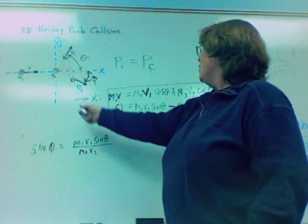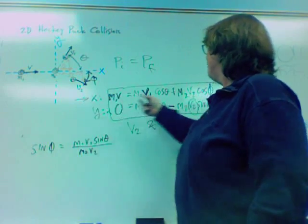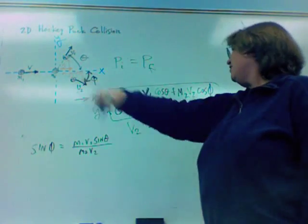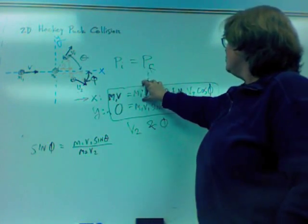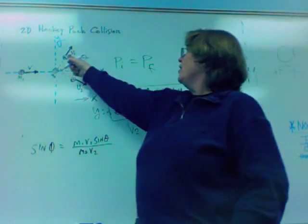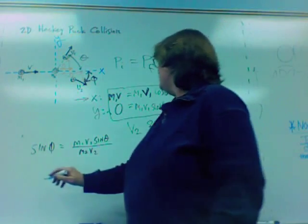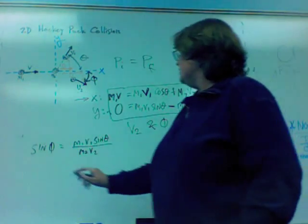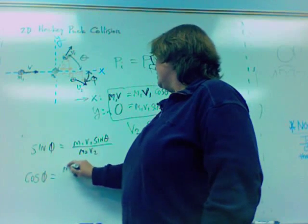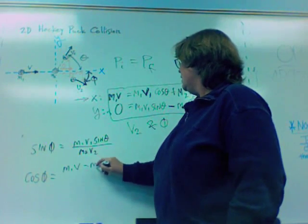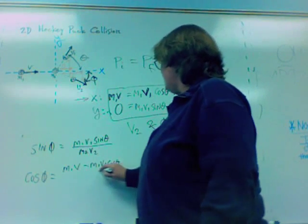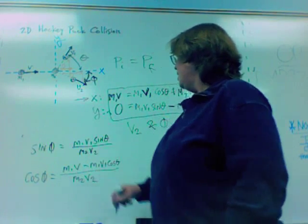Now, let's go ahead and solve for cosine of phi by looking at momentum conservation in the x direction. We're going to need to subtract the x component of the first hockey puck after the collision from both sides. And then we can also divide by M2 V2, and that will give us the cosine of phi all by its lonesome self. So, bringing this over, cosine of theta, and dividing both sides by M2 V2, how convenient.